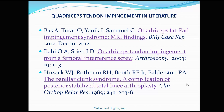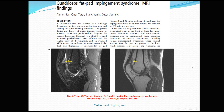In the literature there are only a few reports about quadriceps tendon impingement: one about quadriceps tendon fat pad impingement syndrome as an MRI finding, one about quadriceps tendon impingement from a femoral interference screw, and one about patellar clunk syndrome as a complication of posterior-stabilized knee arthroplasty. The MRI findings show signal changes in the suprapatellar fat pad, but do not explain how the mass effect of the suprapatellar fat pad causes compression of the quadriceps tendon or the underlying cause of these changes.